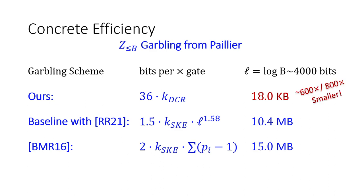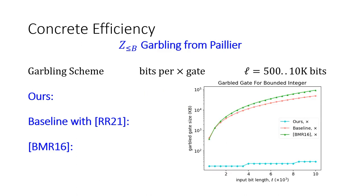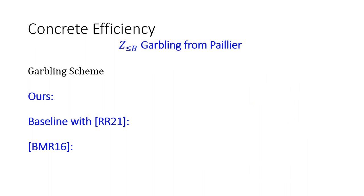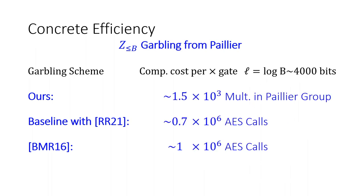The other two solutions require 10 and 50 megabytes respectively, so we are roughly 600 and 800 times smaller. For even larger L, our advantage grows further. As for computation cost, our scheme takes thousands of multiplications in the Paillier group, whereas the other two schemes use AES calls — roughly 1 million AES calls in this setting.